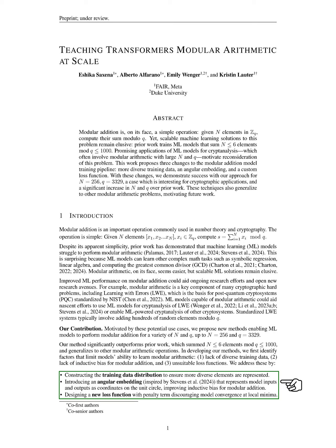To overcome these issues, we enhance the training data by ensuring a wider variety of elements are included. We introduce an angular embedding that represents inputs and outputs as points on a unit circle, which helps the model better understand modular addition. Additionally, we design a new loss function that discourages the model from getting stuck in local minima.